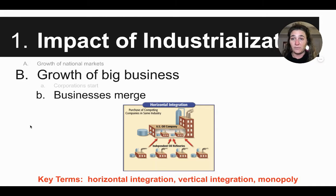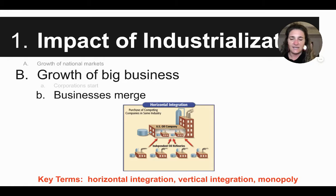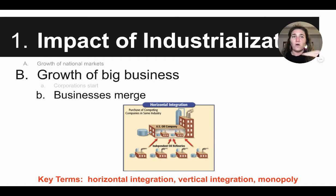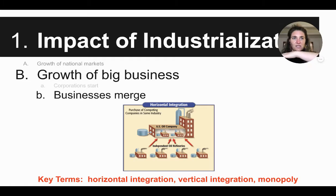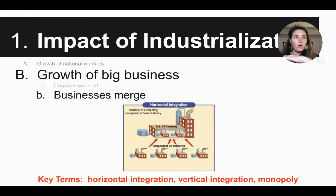Another way we see corporations beginning and businesses getting bigger is through what we call merging of businesses. Businesses begin to merge — join together. There are a couple of different ways that this happens, and this is still around today. Businesses join in order to be more powerful and profitable. The first one we see is what we call horizontal integration or a horizontal merger. This is where one company really controls the industry by buying all the other companies selling the same thing or making the same products. It's across the industry — so here you see an oil company buying all the other oil businesses in the area.